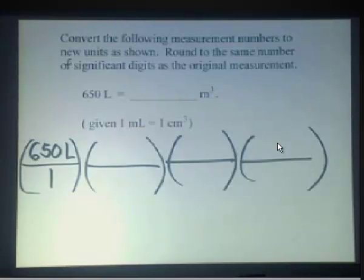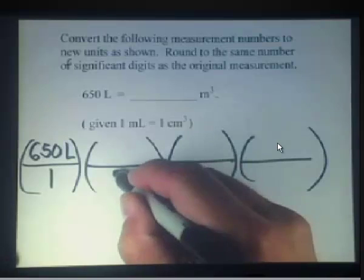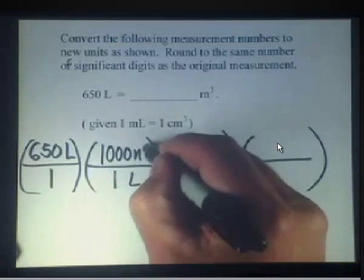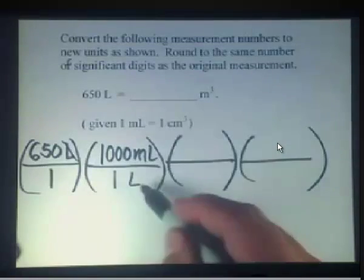First thing we want to do is convert liters to milliliters. So we know that in one liter we have 1,000 milliliters. So this will get our liters to cancel out.